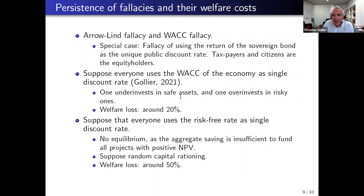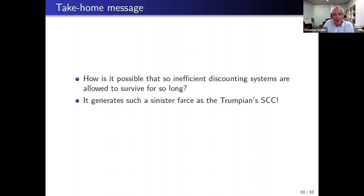Worse, if you use the risk-free rate to evaluate all your projects, you will have so many projects passing the NPV test that you'll have to randomize capital allocation. In the same calibration, I get a welfare loss corresponding to 50% of annual GDP every year. From this striking number, how is it possible that such inefficient discounting systems in clever countries like the US have been allowed to survive for so long? This inefficiency generates such a sinister farce as the Trumpian social cost of carbon of $1 per ton of CO2.